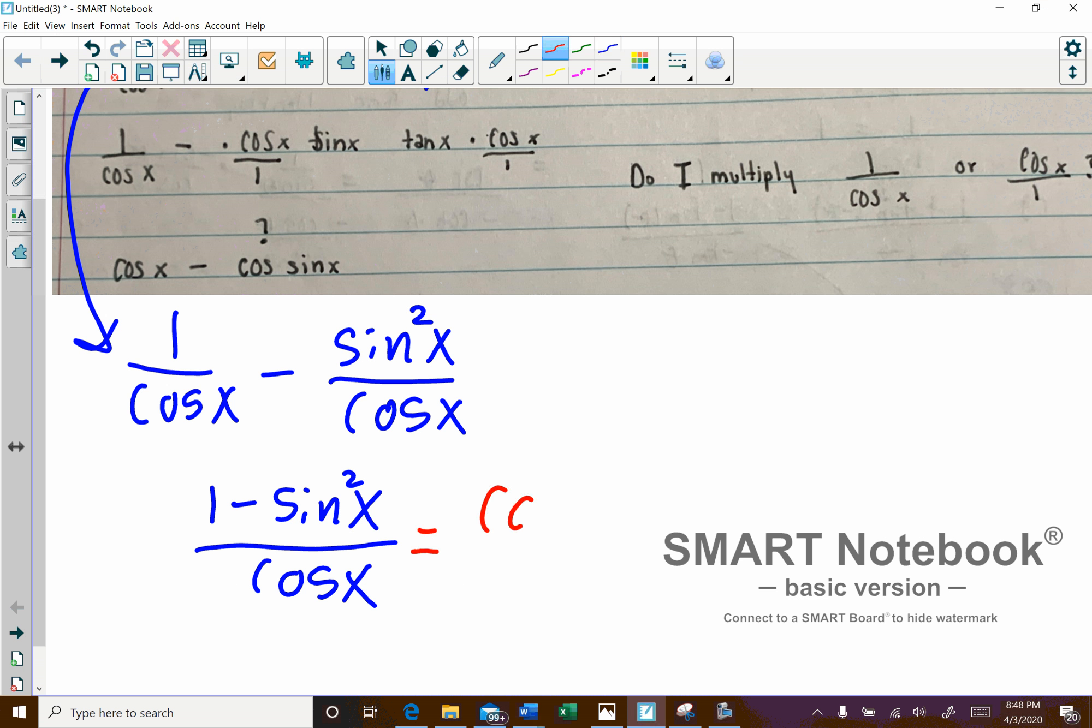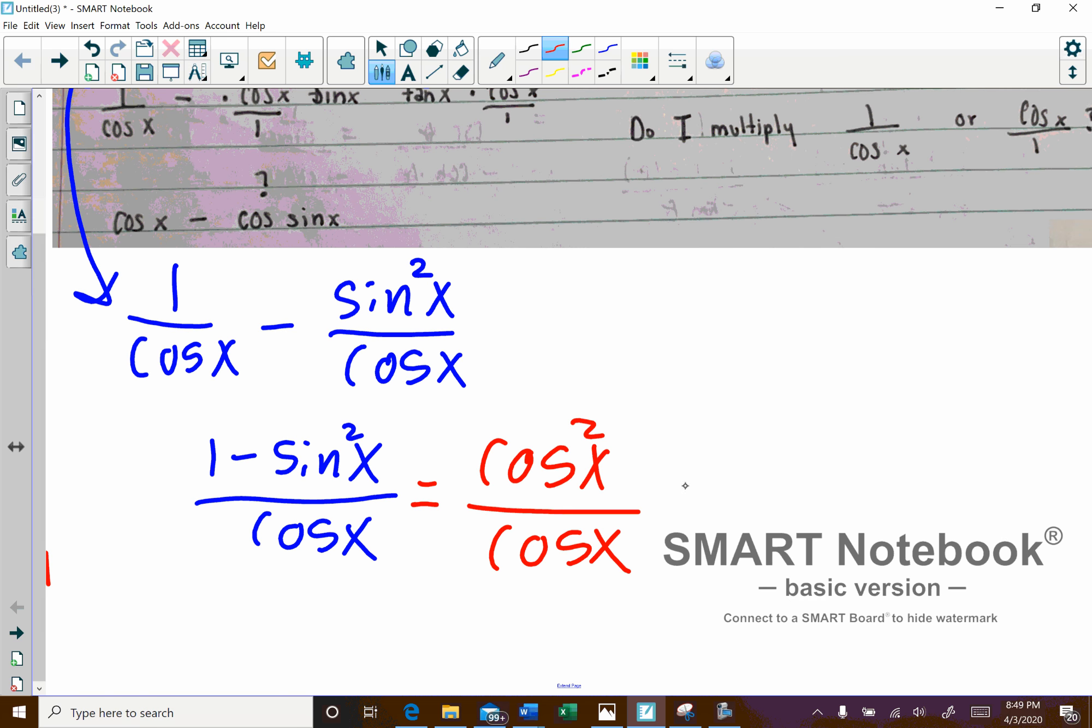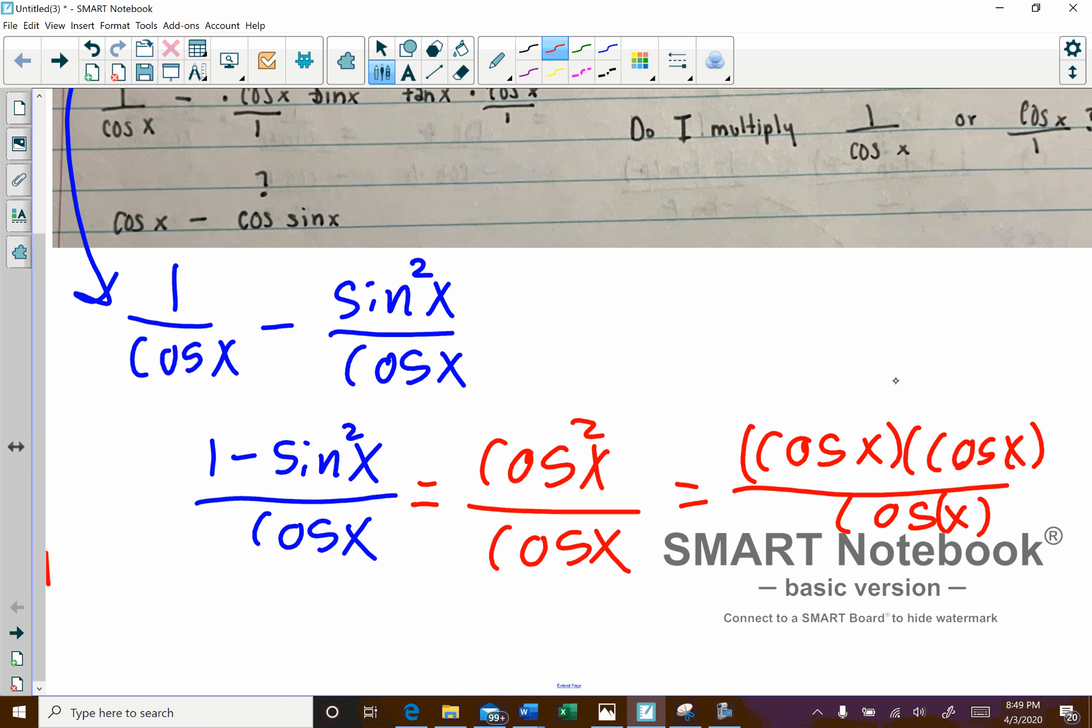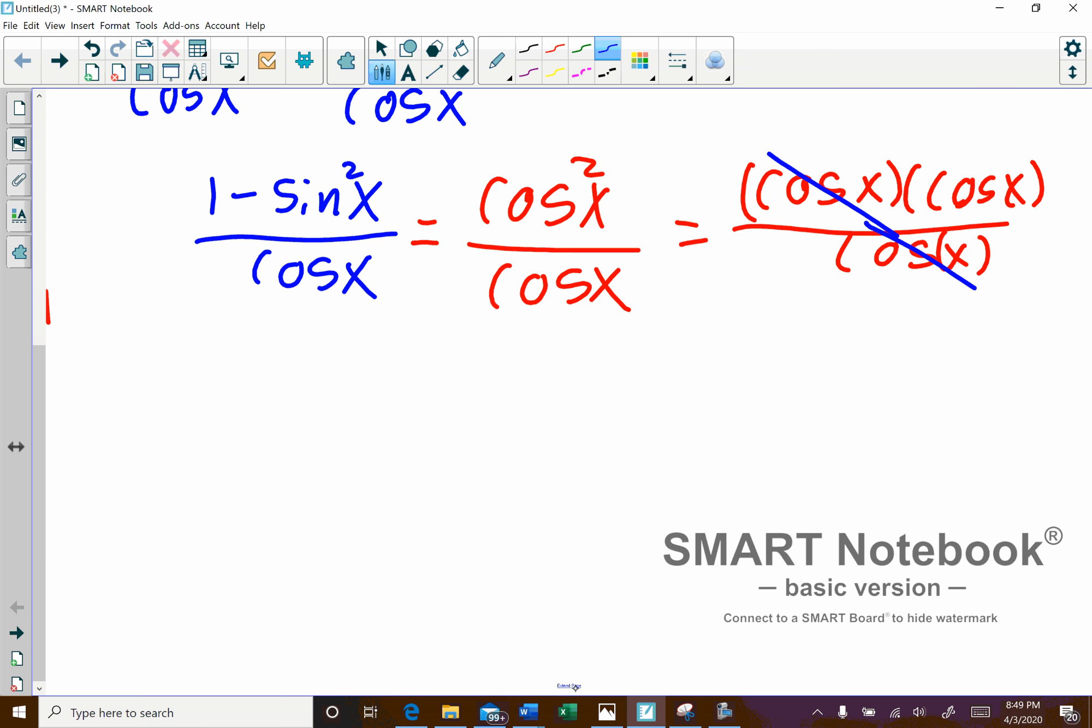So this will be cosine x squared over cosine x. And that square basically means that there's two cosines there, just to make sure we're getting this. So we have cosine x times cosine x over cosine x. And so we'll go ahead and cancel one of those out. And so our final answer is just cosine x. That's it.